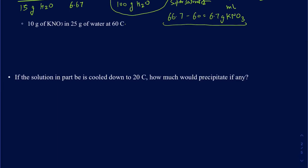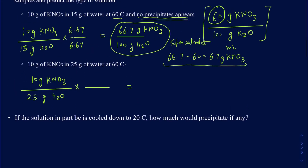For the next question: 10 grams of KNO₃ in 25 grams of water. Multiply both top and bottom by 4 to get 100 grams in the denominator: that gives 40 grams of KNO₃ per 100 grams of water. Since the solubility limit at 60°C is 60 grams, and we only have 40 grams dissolved, this is an unsaturated solution.